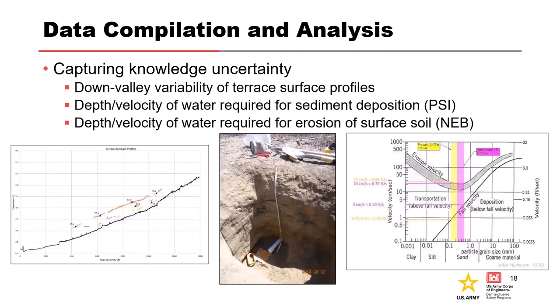There are three primary sources of knowledge uncertainty in estimating PSI and NEB stages and discharges: down-valley variability of terrace surface profiles, the depth and velocity of water required for sediment deposition for PSIs, and the depth and velocity required for erosion of surface soil for non-exceedance bounds. For positive evidence of a flood, we have uncertainty about how much depth and velocity — therefore how much flow — it took to get that deposition. For NEBs, we estimate what flood it would take to erode the surface away. Hydraulic models such as HEC-RAS 2D are often used to estimate discharges and carry through uncertainties to estimate flow ranges for individual floods and inform perception thresholds.